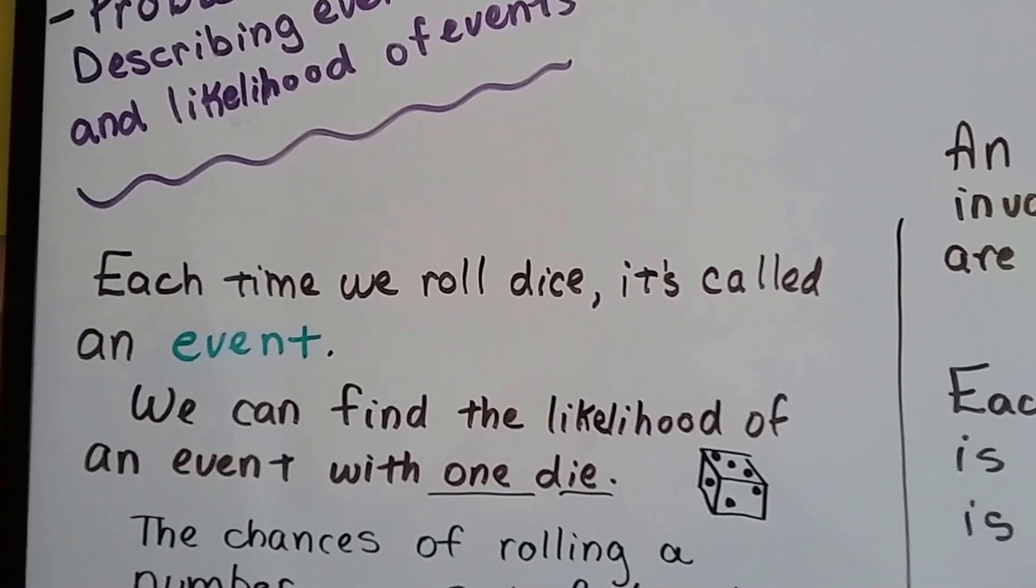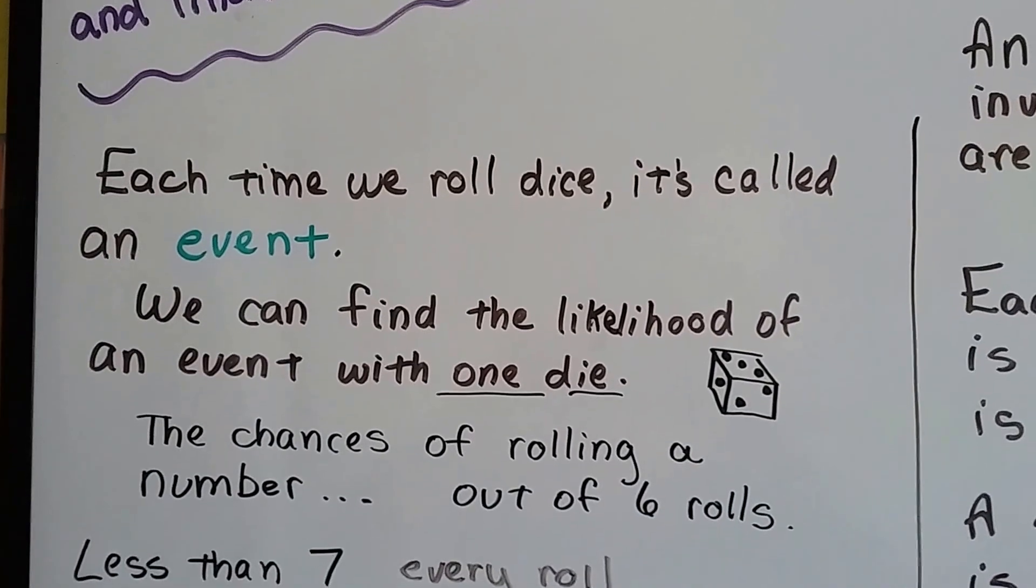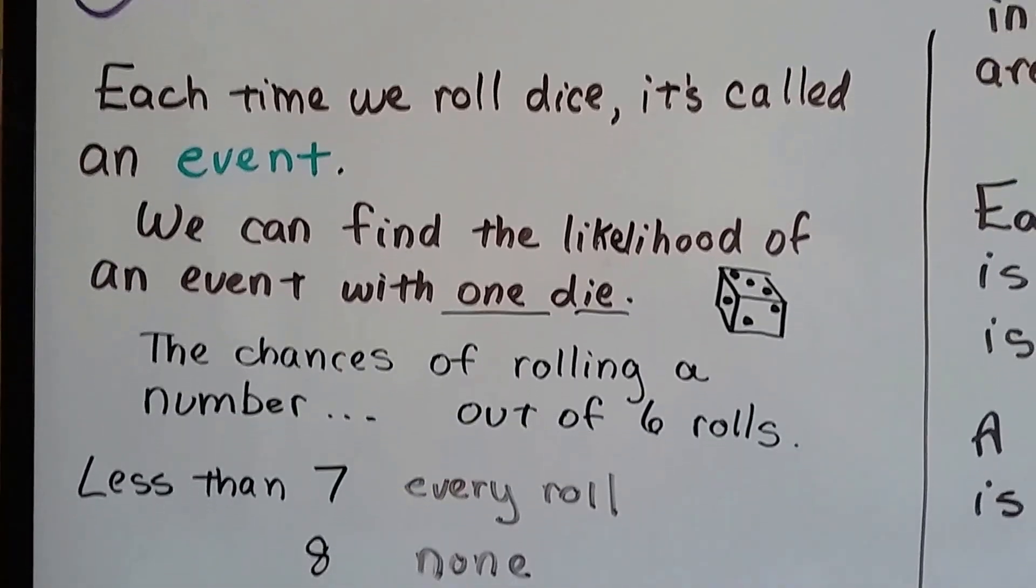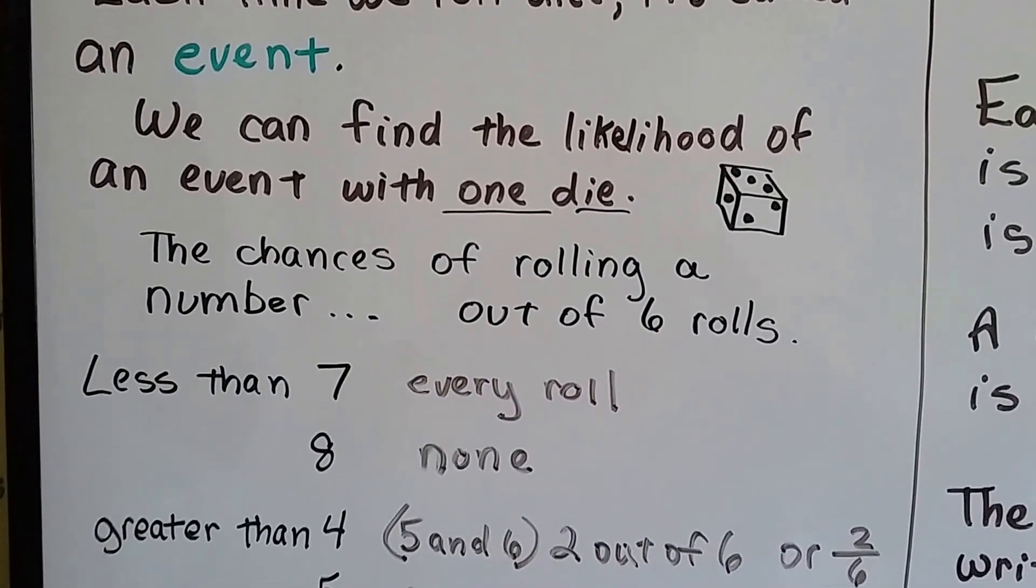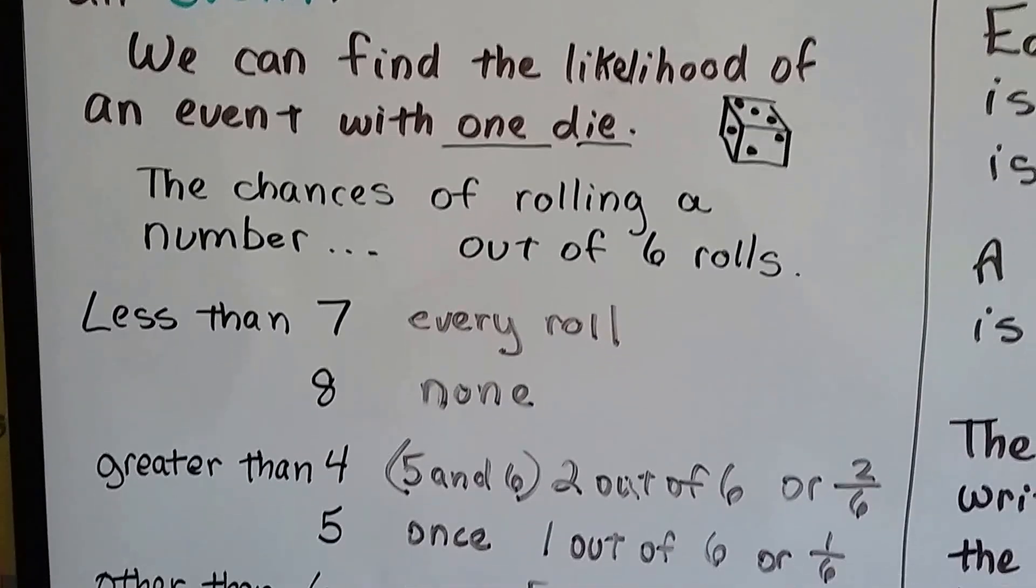Each time we roll dice, it's called an event, and we can find the likelihood of an event with one die, the chances of rolling a number out of six rolls.